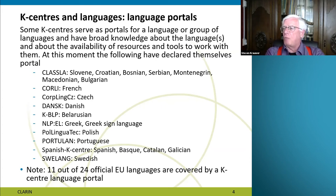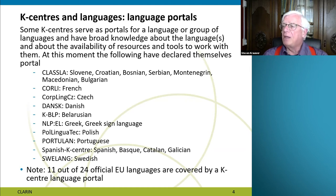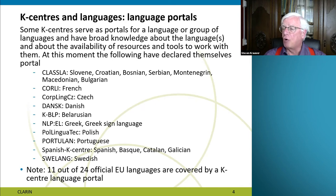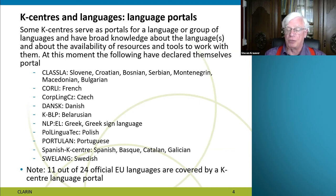If you look at the relationship between K-centers and languages, one type of K-center is the language portals. These try to give broad access to all possible knowledge about the language and its processing, availability of resources and tools, etc. At this moment we have a number of K-centers that have declared themselves as portals: CLASS focusing on South Slavic languages, CORLEY on French, CorpLinkCZ on Czech, DANS on Danish, KBOP and Belarusian, NLPL on Greek and Greek Sign Language, PoLingwaTek on Polish, PortuLando on Portuguese, and the Spanish K-center covering four languages — Spanish, Basque, Catalan, and Galician — and SueLang focusing on Swedish. So 11 out of 24 official EU languages are at this moment covered by a K-center language portal.